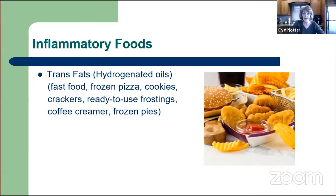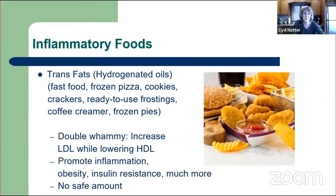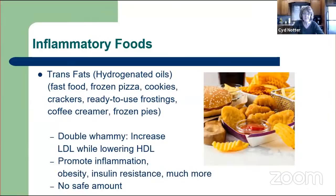Next are trans fats—hydrogenated or partially hydrogenated oils—found in fast food, frozen pizza, cookies, crackers, ready-to-use frostings, coffee creamers, frozen pies, and so much more. When oils are heated and treated with hydrogen, they go from a liquid oil to a solid shortening, even higher in saturated fat. Trans fats are a double whammy because they increase bad cholesterol while lowering the good. They promote inflammation, obesity, and insulin resistance. Even our government said there is no safe amount of trans fat. After the government cracked down, food manufacturers started using palm oils and coconut oil to replace them—but we don't want to be consuming any type of oil at all.